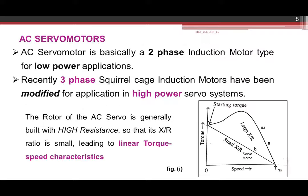It should have linear torque-speed characteristics — very essential. Output torque at any speed should be roughly proportional to the applied control signal, and stable operation without oscillations or overshoot is mandatory for a good servo motor. AC servo motor is basically a two-phase induction motor type for low power applications, but three-phase type is also present. The rotor of the AC servo motor is generally squirrel cage and should be built with high resistance so that the X/R ratio is small, leading to linear torque-speed characteristics.